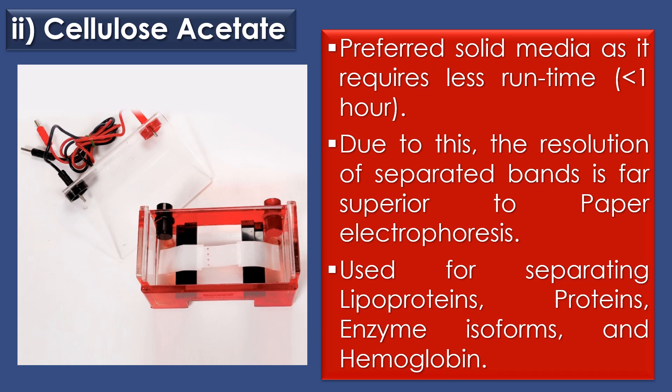The second support medium is cellulose acetate. Cellulose acetate membrane is a preferred solid medium as it requires less than one hour of run time. Due to this shorter duration, the resolution of separated bands is far superior to paper electrophoresis. Though expensive, it is widely used for separating lipoproteins, proteins, enzyme isoforms, and hemoglobin variants due to superior resolution and less interaction with the analyte in the sample.